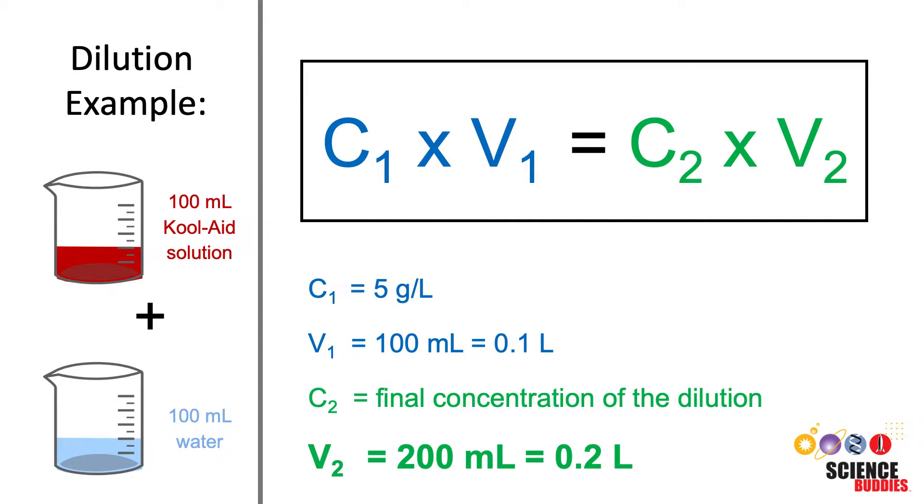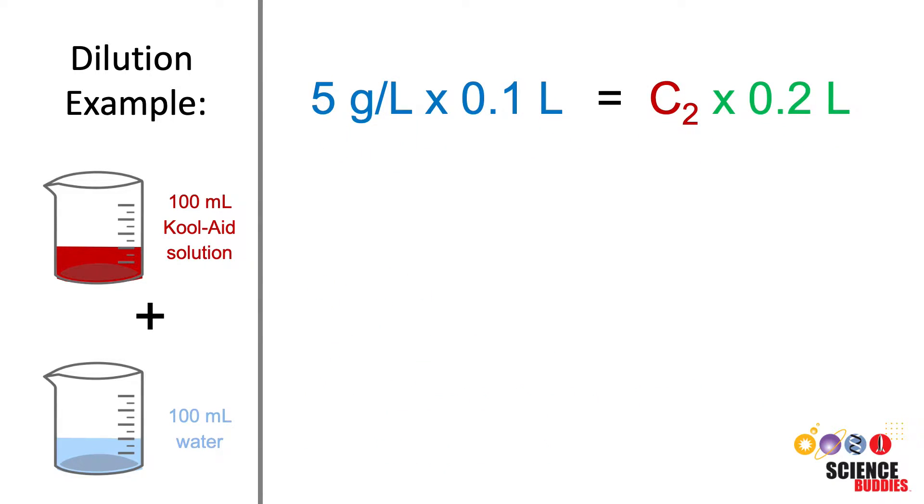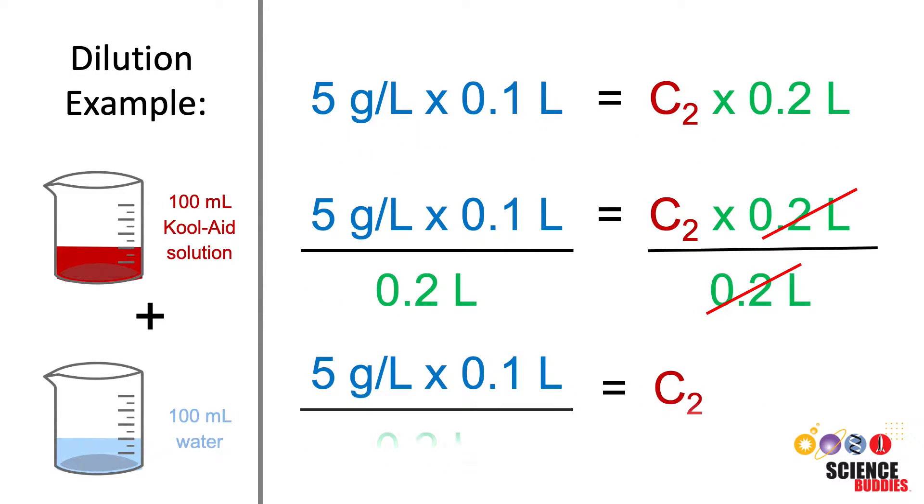And the final volume of the solution, V2, is 200 ml or 0.2 liters. We put these numbers into the equation and can then solve for C2, the final concentration of the new Kool-Aid dilution. The result is 2.5 grams per liter.